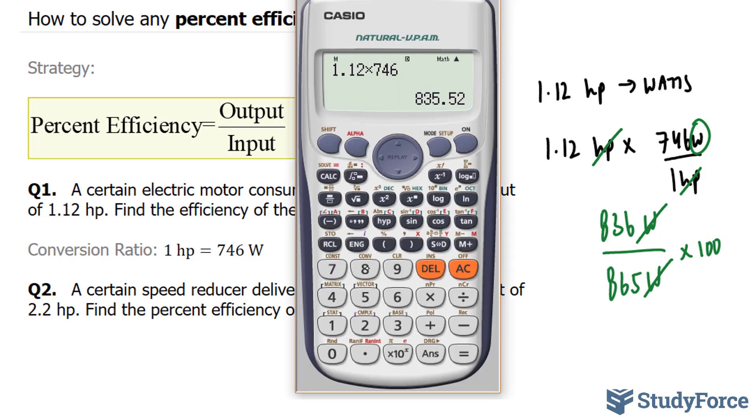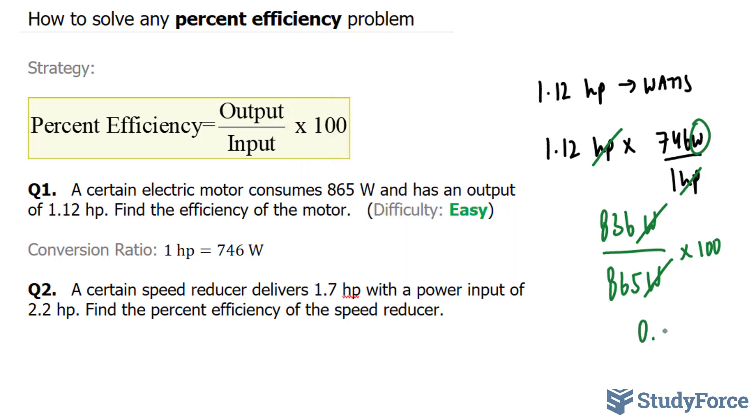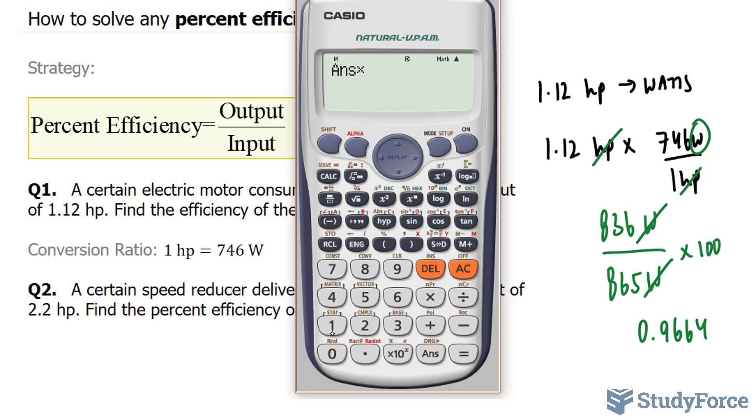So we're going to divide 836 by 865, and we get a percentage efficiency, which is excellent, of 0.966. And mind you, we haven't multiplied by 100 yet. So let's multiply that by 100.